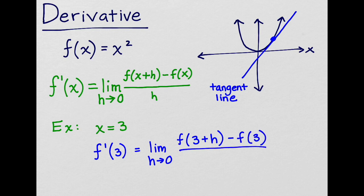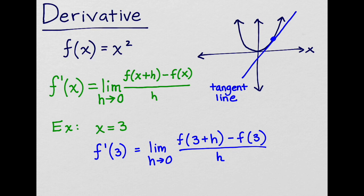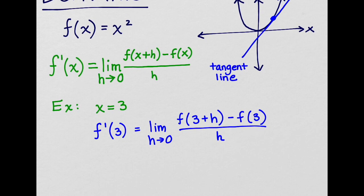The next step is to expand the equation. Plugging in the values, we get f prime of 3 equals the limit as h approaches 0 of 3 plus h quantity squared minus 3 squared over h.